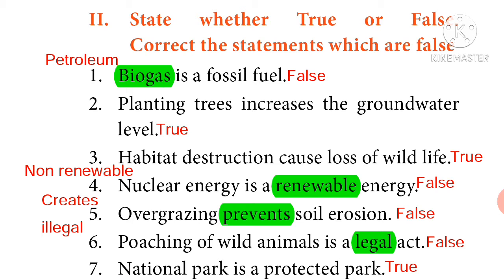Planting trees increases the groundwater level — True. Habitat destruction causes loss of wildlife — True. Nuclear energy is a renewable energy — the given statement is false; the correct statement is nuclear energy is a non-renewable energy. Overgrazing prevents soil erosion — false; the correct statement is overgrazing creates soil erosion. Poaching of wild animals is a legal act — false; poaching of wild animals is an illegal act.